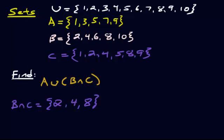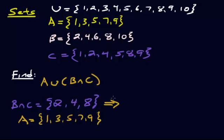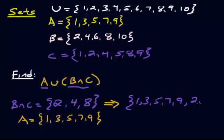Now let's write down A — A was all the odd numbers. Since we're taking A and unioning that with B intersect C, all we're going to do is add these two sets together. So take everything in A: all the odd numbers. Then union that with B intersect C. Go through the list — anything in B intersect C that we haven't already listed, write those down. That's 2, 4, and 8. We don't actually have 2, 4, and 8 in A at all, so all three of them get listed.